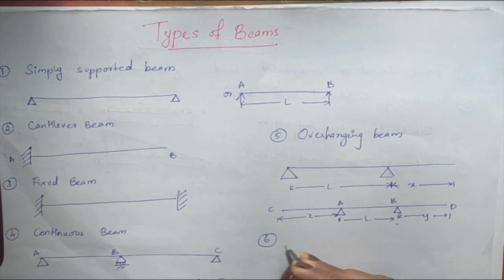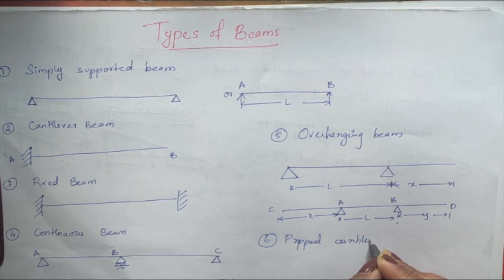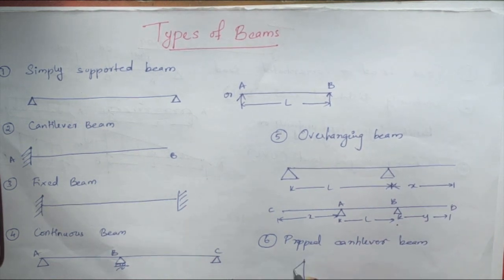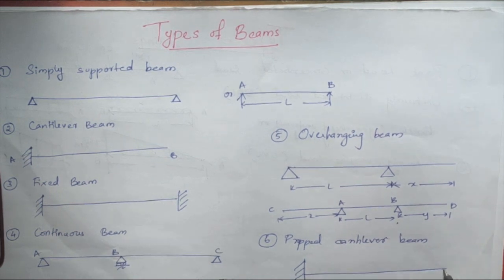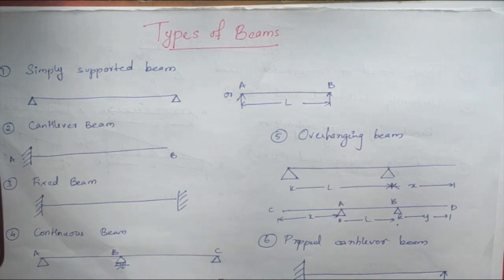There is one more type which is not very important but you should know it — that is a propped cantilever beam. A propped cantilever beam is fixed at one end and the other end is supported by a simple support or a roller. These are the types of beams we have to study.